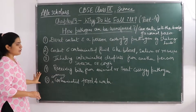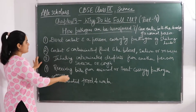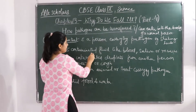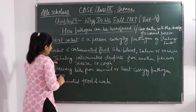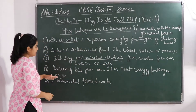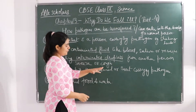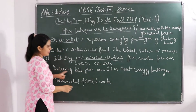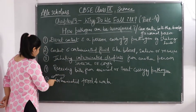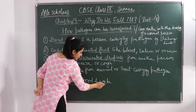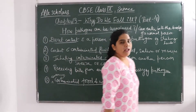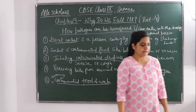So these are the five ways pathogens are transferred: by direct contact, by contaminated fluid, by inhaling contaminated droplets, by receiving bites from an animal or insect carrying pathogens, and by consuming contaminated food and water.